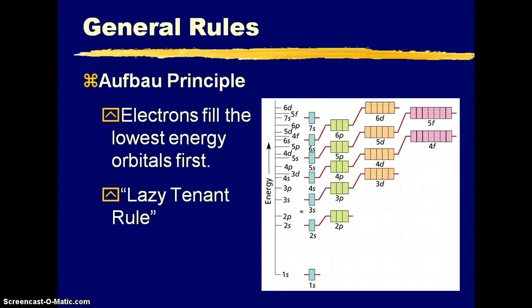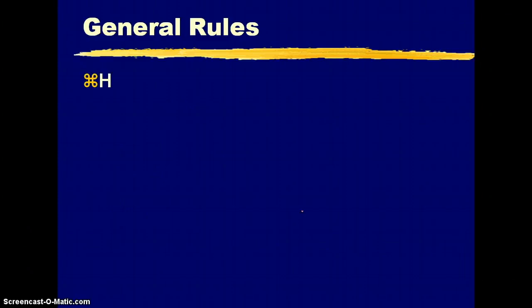We're still going with the same ideas before of filling the lowest energy level first. So we always start with 1S. This is called the lazy tenant rule because people always want to be on the first floor before they want to climb to the seventh floor with stairs and no elevator.